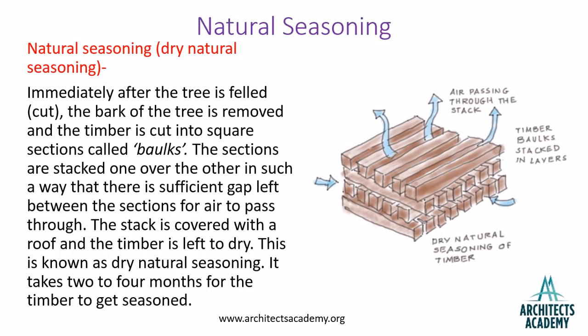In natural seasoning, immediately after the tree is felled — that means when it is cut — the bark of the tree is removed and the timber is cut into square sections called balks. The sections are stacked one over the other in such a way that there is sufficient gap left between the sections for air to pass through. The stack is covered with a roof and the timber is left to dry. This is known as dry natural seasoning, and it takes two to four months for the timber to get seasoned.